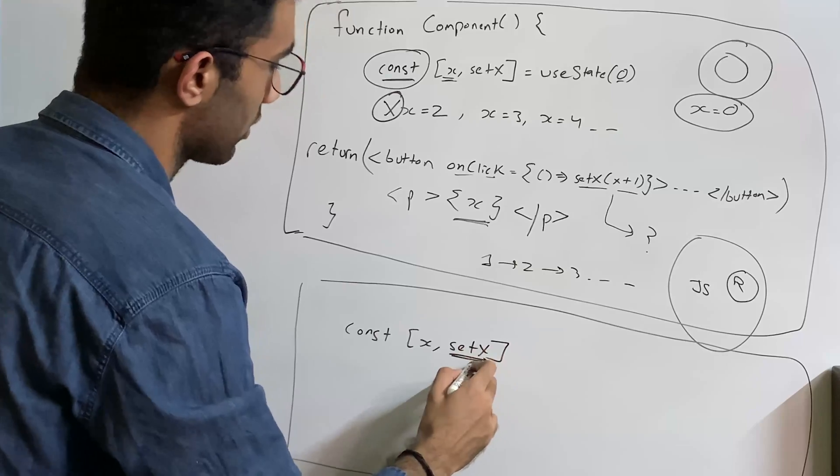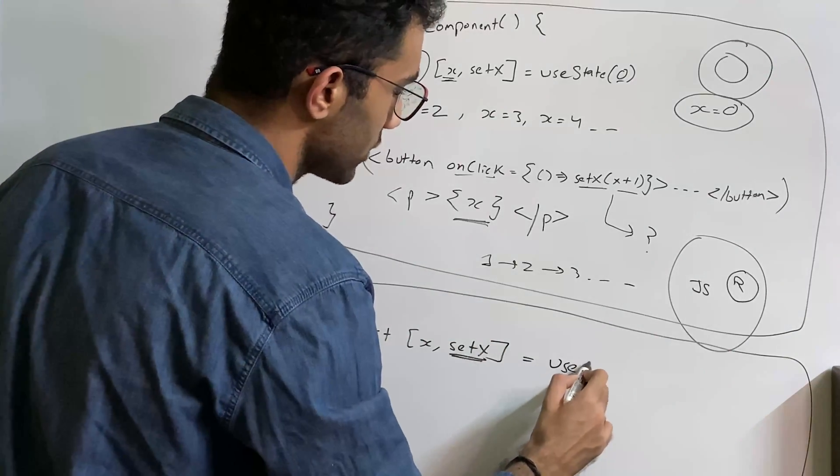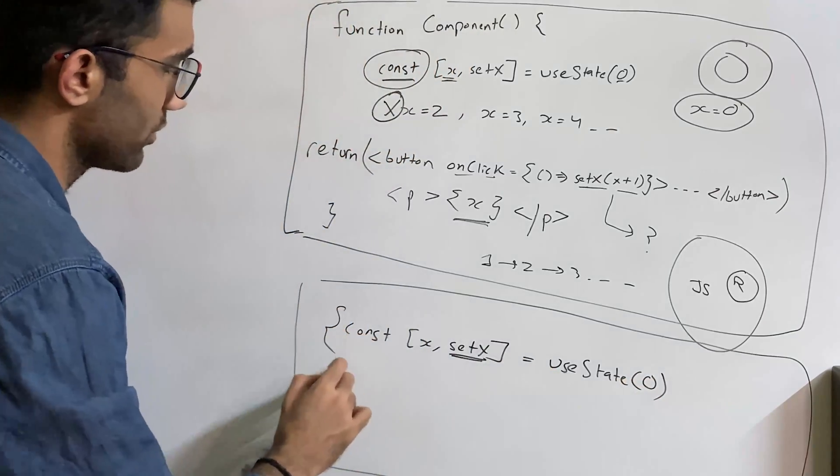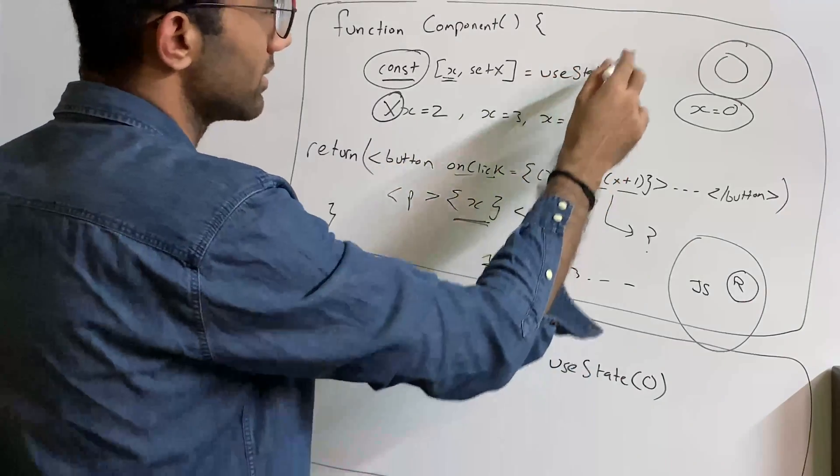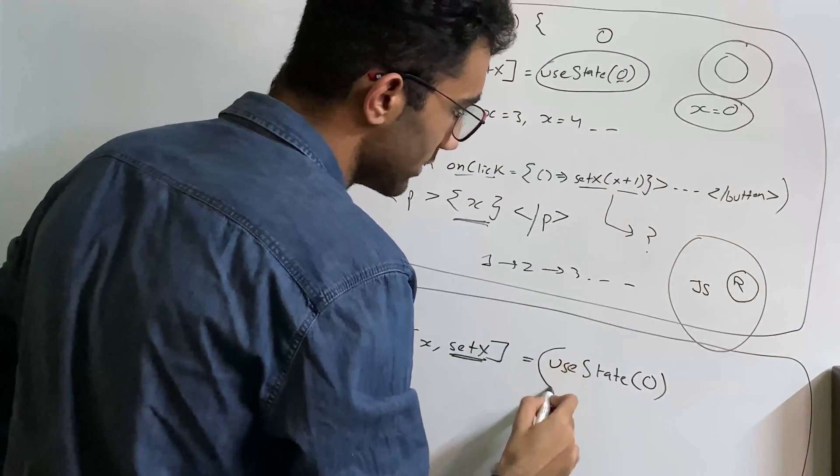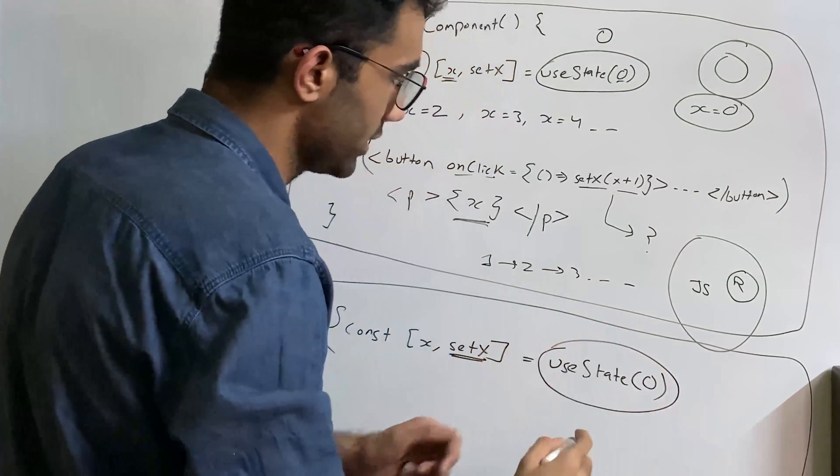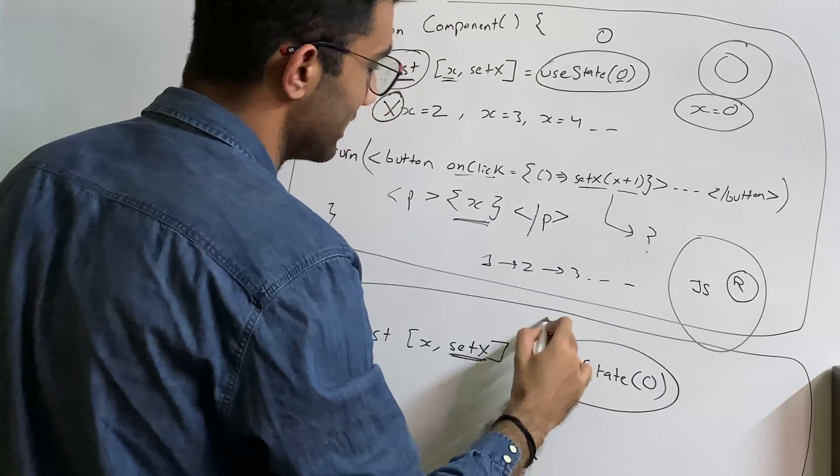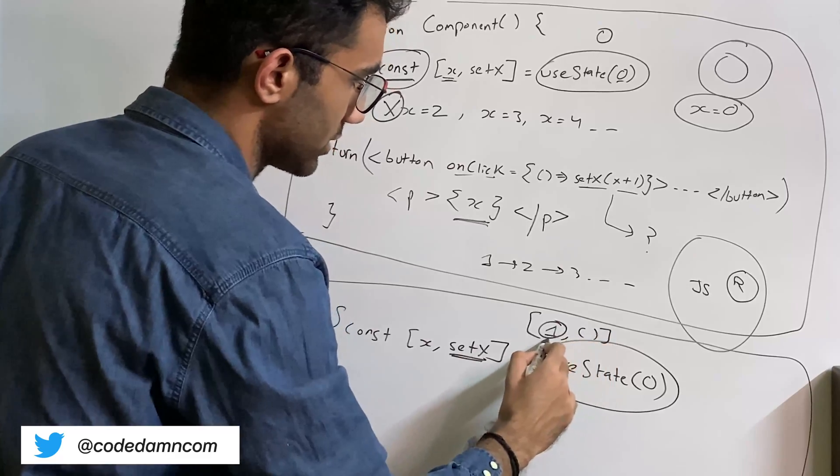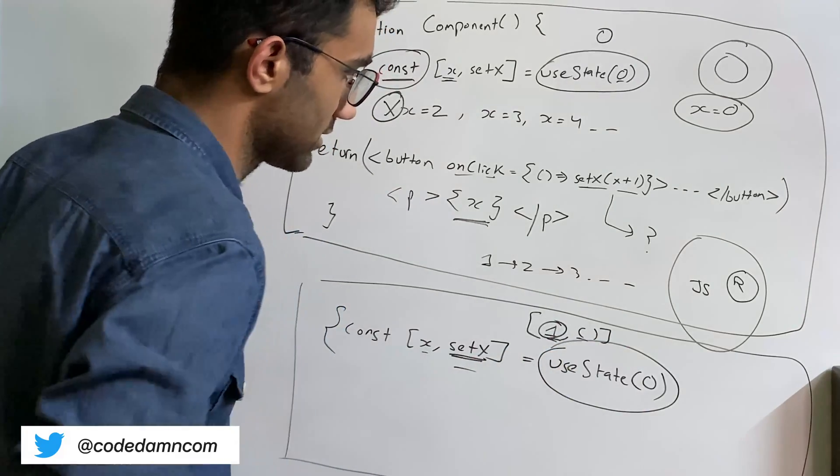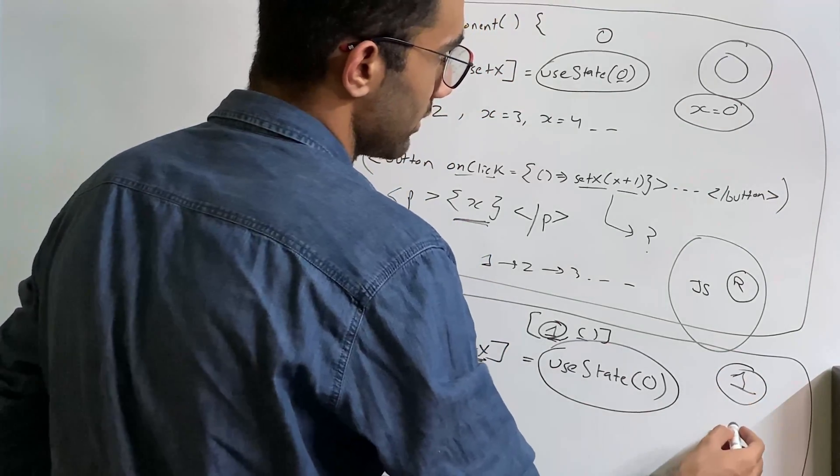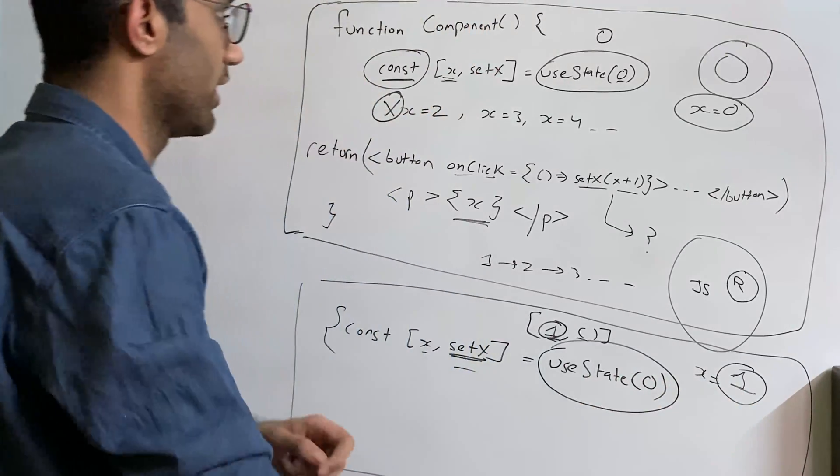This is the exact same line which happens as well. The only difference is in this universe, in this function of the universe, this expression right here returns zero but in this universe or this iteration, this expression right here returns you a one instead of a zero which makes all the difference, right? One comma the function basically because then the x becomes one and then set x becomes something else, right? So now in this part of the universe, the x value is one and then of course you have the set x as a function modifier as well.